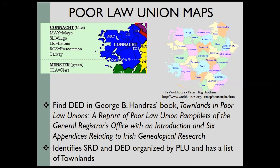George Hander's book 'Townlands in Poor Law Unions' is a really good book if you need to find specific names of the poor law unions that were in effect at this time. By the late 1800s, the poor law unions were changed to superintendent registrar districts, simply because the name 'Poor Law Union' had a really bad connotation and they were trying to say Ireland was not in that bad of shape. It's the same division — just a different name. This book will tell you the different superintendent registrar districts organized by the PLU, with a list of townlands within those divisions to help narrow down your search.